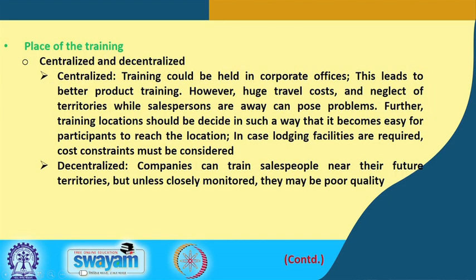Training location can be centralized or decentralized. Centralized training at corporate offices leads to better product training, but involves high travel costs and neglect of territories while salespeople are away. Decentralized training near future territories is convenient, but unless closely monitored, quality may dilute. Both approaches have their pros and cons.